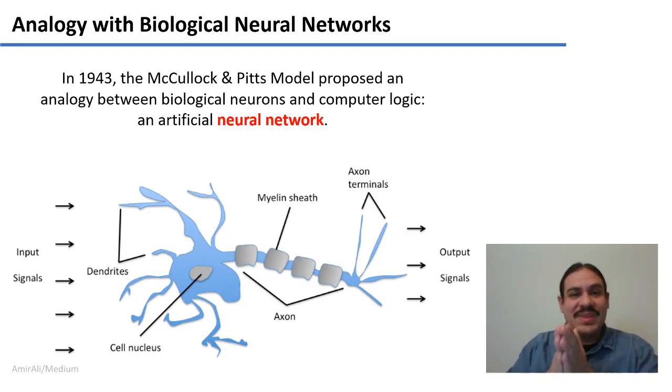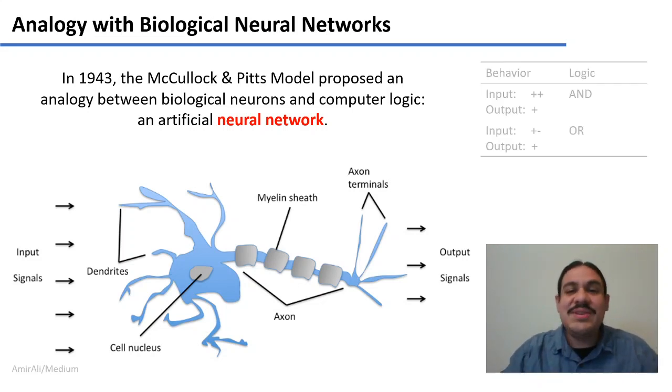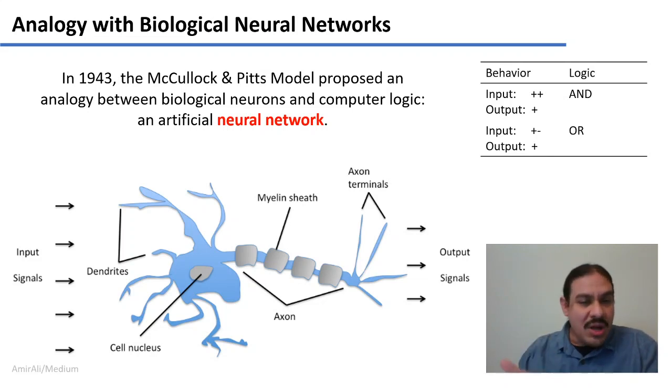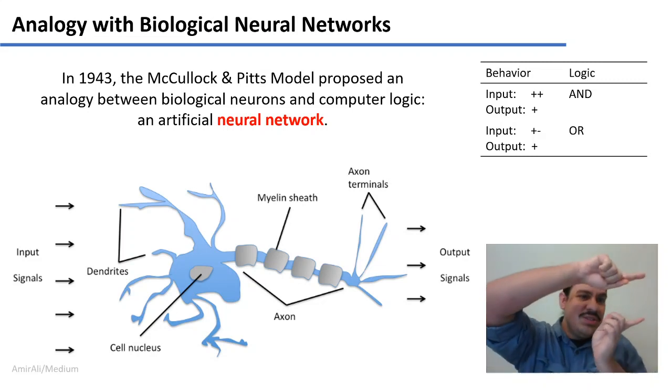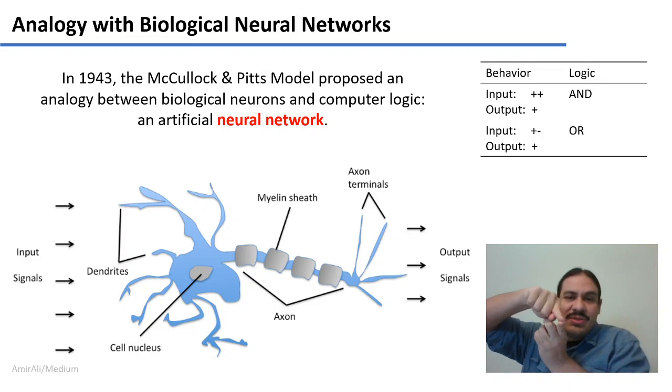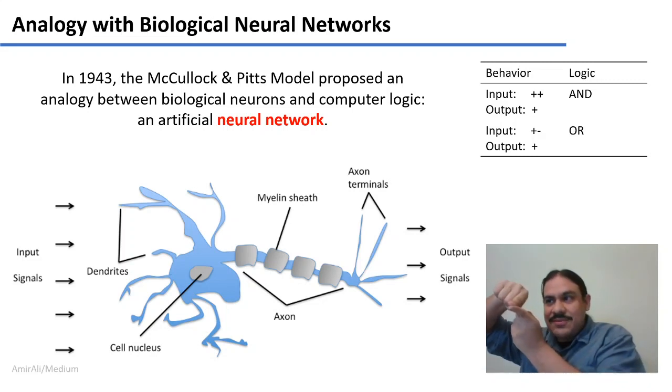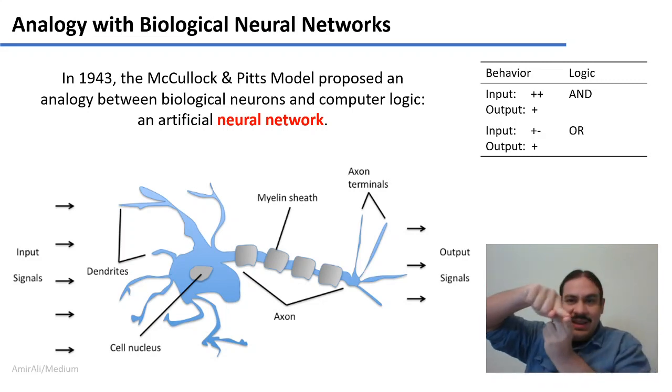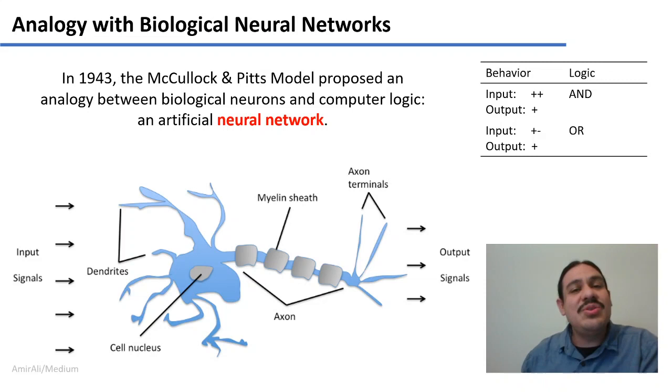And these scientists proposed that this is very similar to the behavior of logical circuits. For example, if a biological neuron got two positive electric inputs, and then used that to give a positive electric output, you have two positives, and with that you output a positive. This is similar to the behavior of logical gate AND, where you have yes and yes equals yes.